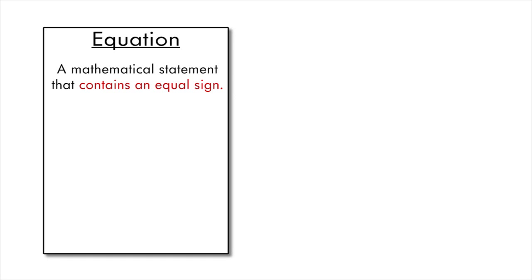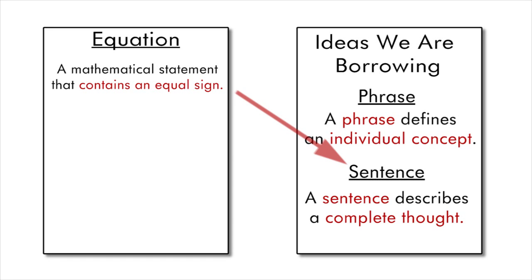An equation is a mathematical sentence and contains an equal sign. The purpose of an equation is to show the relationship between two values. Since we describe values with expressions, we can say the purpose of an equation is to show the relationship between two expressions.